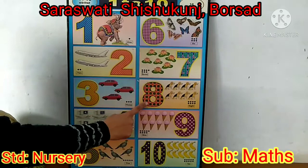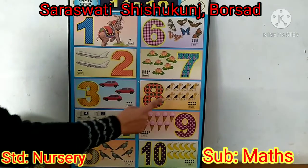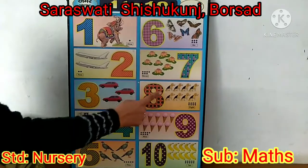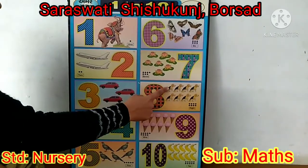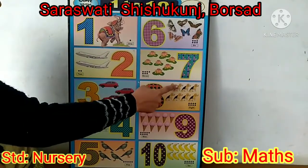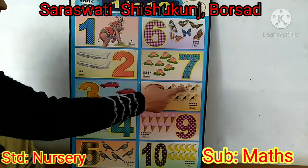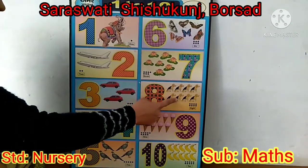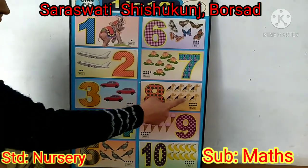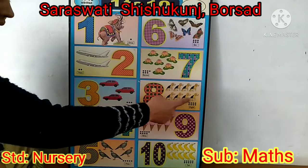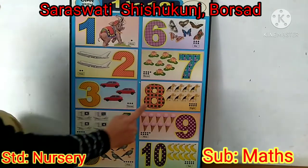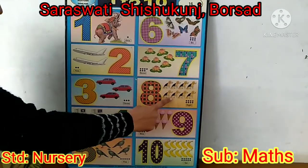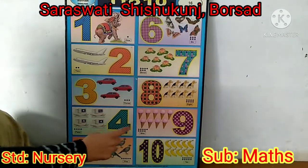Number 8? So let's count. 8 doggies. 1, 2, 3, 4, 5, 6, 7, 8. Number 8, 8 doggies.